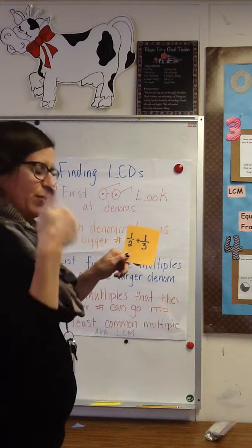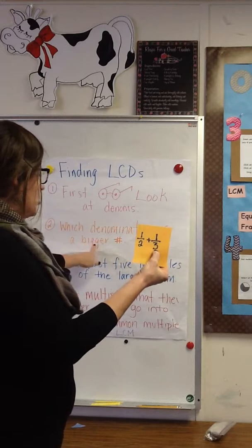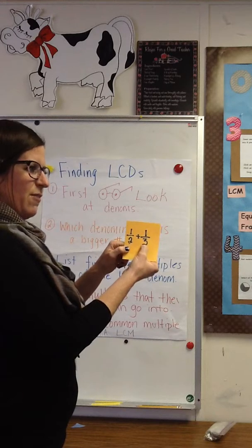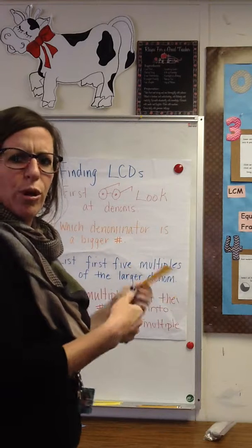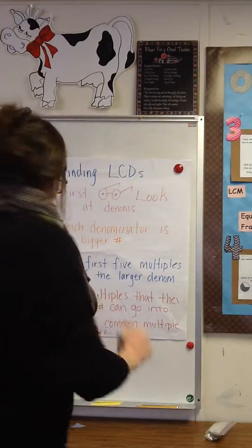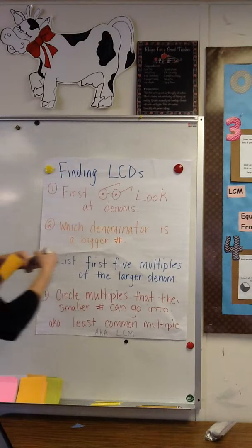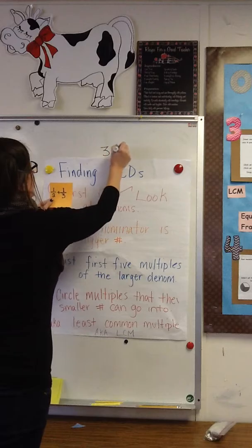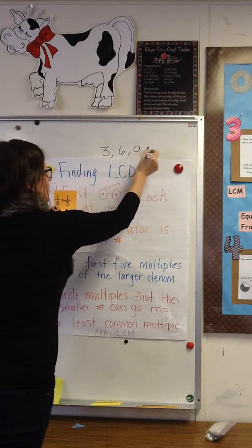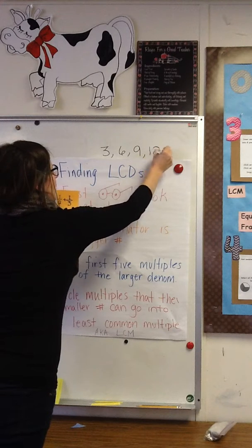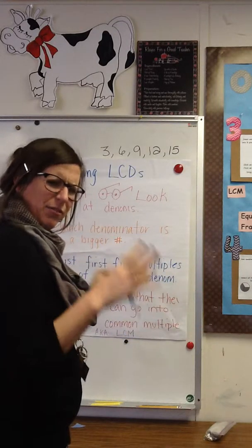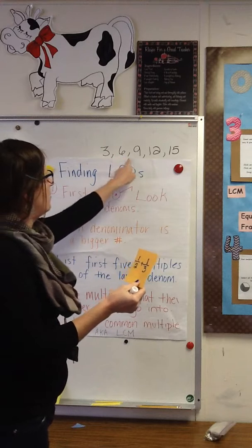So three is the larger number. Then I have to write down the first five multiples of three. Multiples means it gets bigger. So if I write down the multiples for the number three, I'm going to write three, six, nine — going up by three each time — then 12 and 15, and I'm going to stop there. I may have to go further if they don't have anything in common, but for right now five seems like a good number.